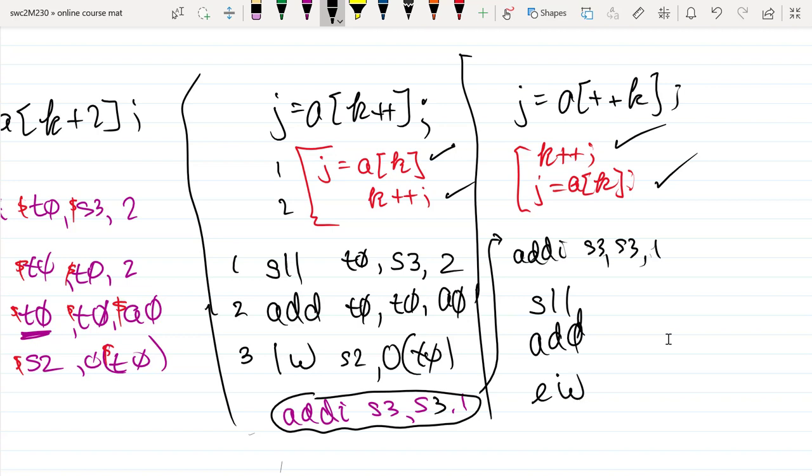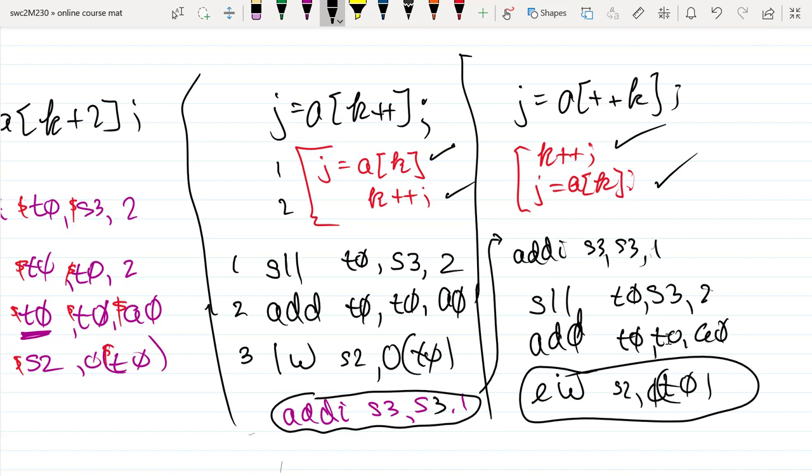So I'm going to have to multiply k by 4 and store it into a temporary variable. I'm going to take that temporary and add it to the beginning address of the array, a sub 0, which we're calling a0. I'll hold on to that with t0, and then I'll load the value that's at that address and store it into j. So j equals a sub k happens here.